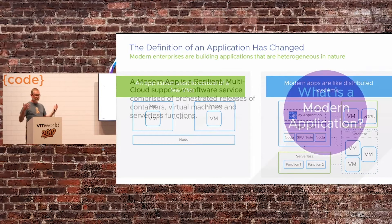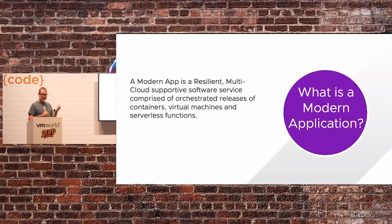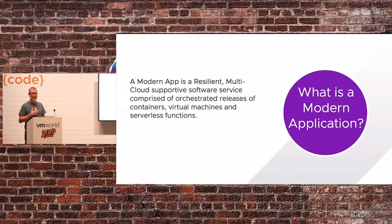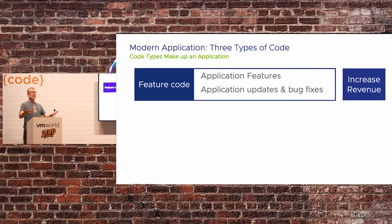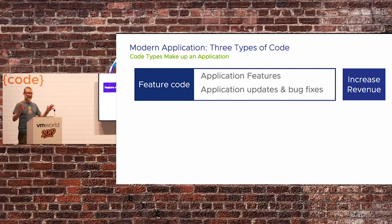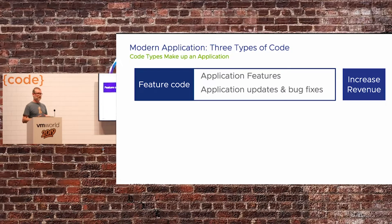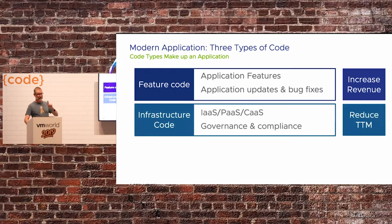A modern app is a resilient, multi-cloud supportive application comprised of orchestrated releases of containers, virtual machines, serverless functions, and probably also some other things we haven't heard about yet, like maybe microkernels. Developers write feature code — that's the stuff that brings business value. But there are two other kinds of code, and chances are you write this kind: infrastructure code. We need the application to actually run somewhere — it doesn't magically just run — so we write all this code because governance is important.